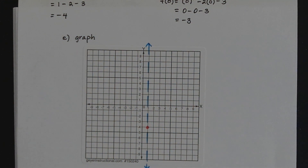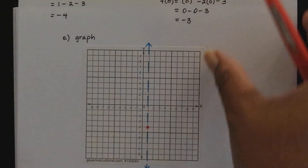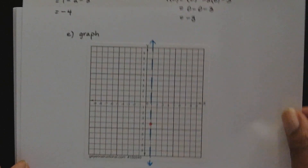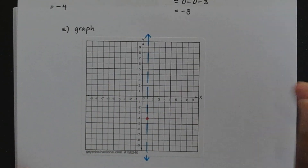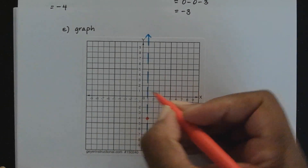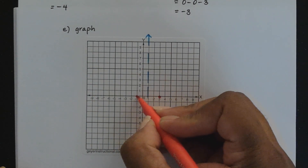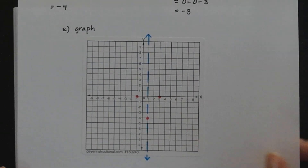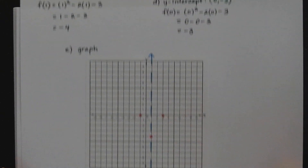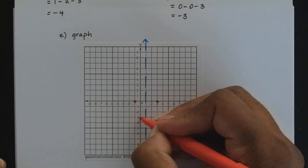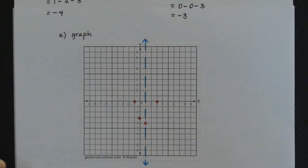Next are the x-intercepts: they are (3, 0) and (negative 1, 0). So (3, 0) will be on the x-axis here, and (negative 1, 0) will be on the x-axis here. The y-intercept is the ordered pair (0, negative 3), so we stay at 0 but go down to negative 3 on the y-axis.